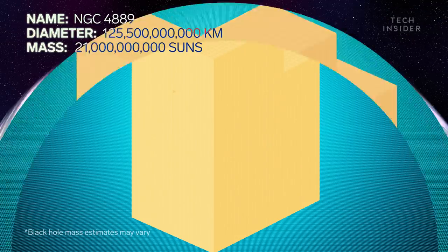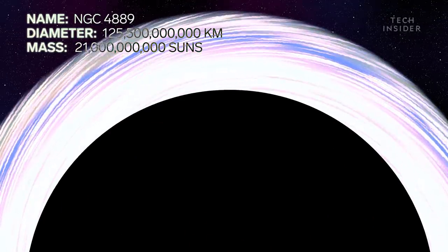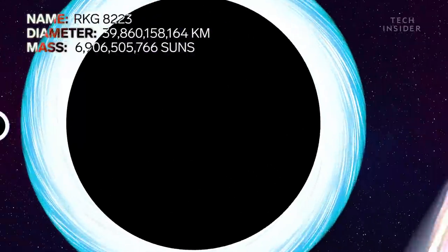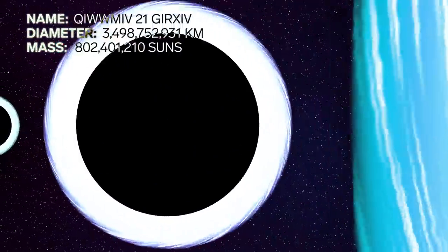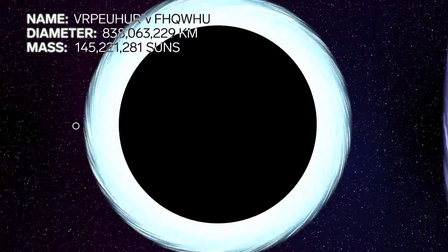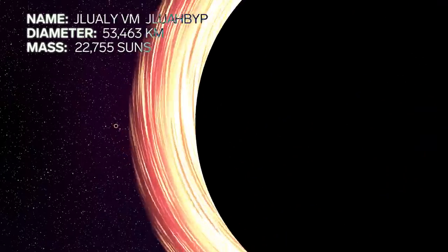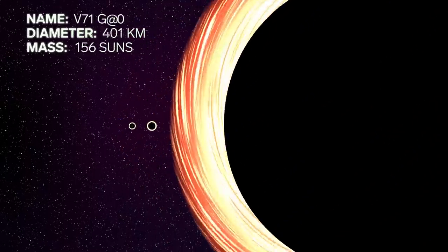So there you have it. Black holes can be millions of times larger than suns and planets. Or as small as a city. It all depends on how much mass is inside. Turns out, when it comes to the cosmos, size isn't the only thing that matters.